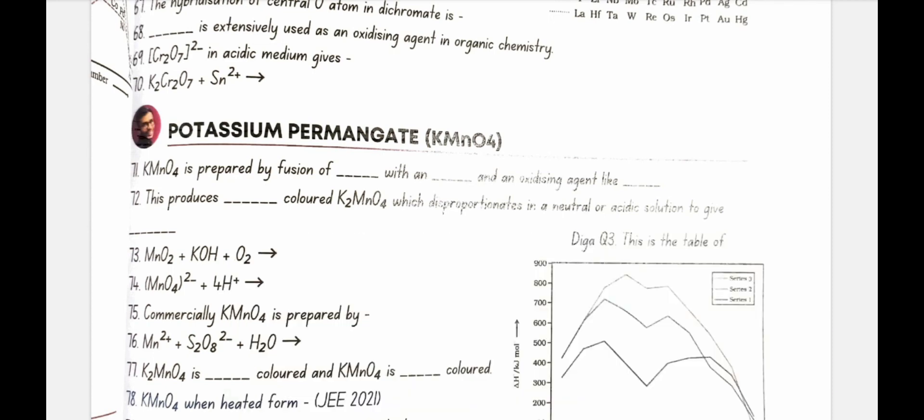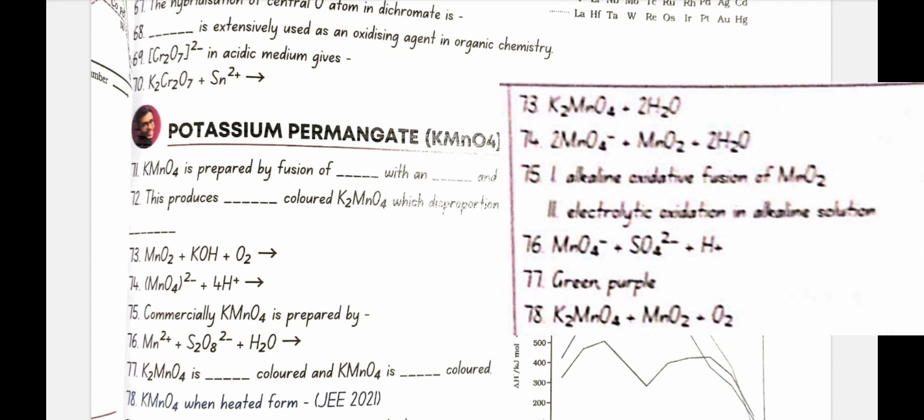MnO2 plus KOH plus O2 gives K2MnO4 plus H2O. MnO4 2 minus plus H plus gives MnO4 minus plus MnO2 plus H2O. Commercially KMnO4 is prepared by alkaline oxidative fusion of MnO2 and electrolytic oxidation in alkaline solution.